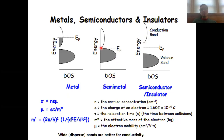And we have the intermediate case in which the valence band and the conduction band touch, but the density of states at the Fermi level is zero. In this case, we have a semi-metal.